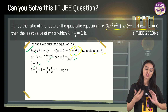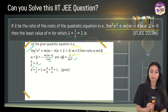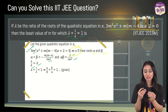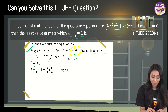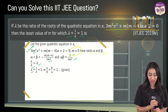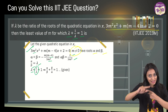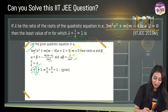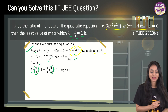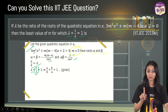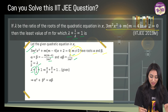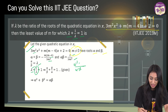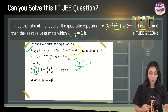The condition given is lambda + 1/lambda = 1. Lambda = alpha/beta, so 1/lambda = beta/alpha. Taking the LCM as alpha·beta, the numerator becomes alpha² + beta². So the equation simplifies to alpha² + beta² = alpha·beta.